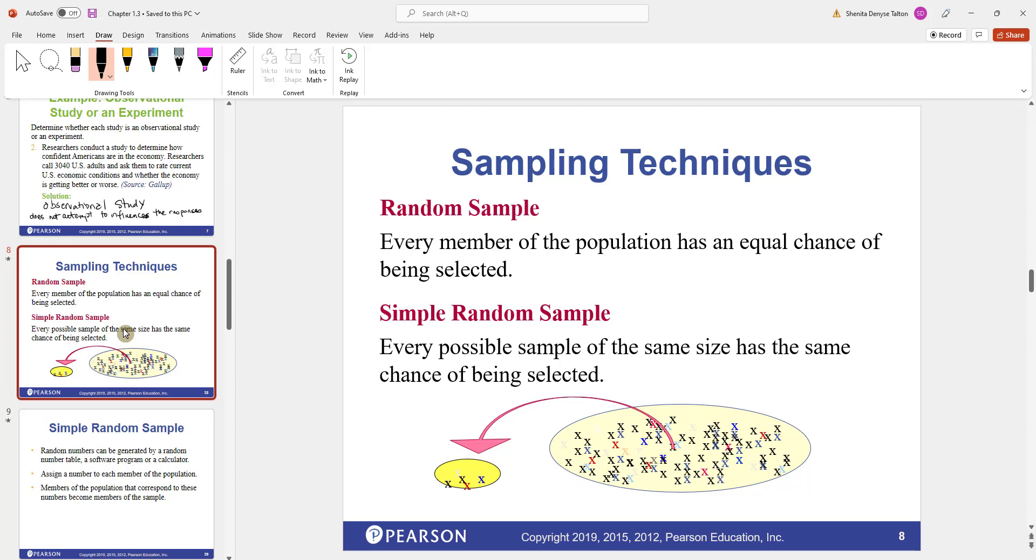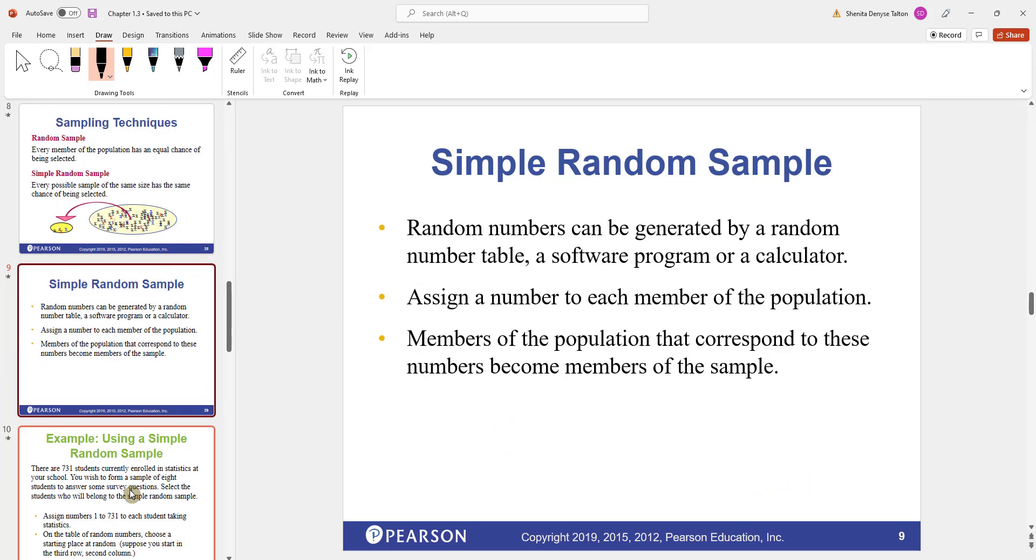You can think of simple random sample. I used to be a big sweepstaker. I used to enter sweepstakes. And sometimes in the grocery stores, they will have drop boxes where you put your name in the box. And if they pick your name, you win a prize. So that's a simple random sample. Every piece of paper in the box has an equal chance of being pulled. Another way you can do simple random sample is by a random number table or a software program or a calculator. What you'll do is you assign a number to each member of the population. Members of the population that correspond to these numbers become members of the sample.